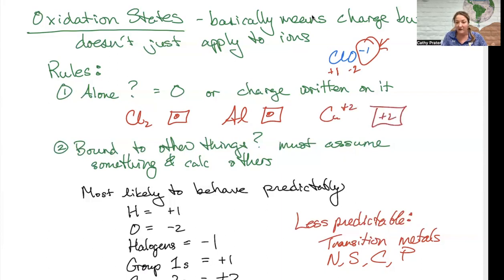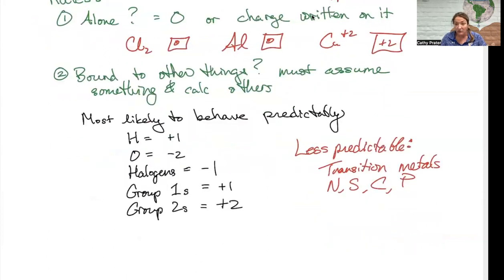If something is bound to other things, we have to kind of have a hierarchy of rules. But as you know by now, most of the things that we have that are rules all have exceptions. So I wrote an order here of what's most likely to behave predictably: hydrogen at plus one, oxygen at minus two when bound to other things, the halogens at negative one, and then the group ones and group twos.